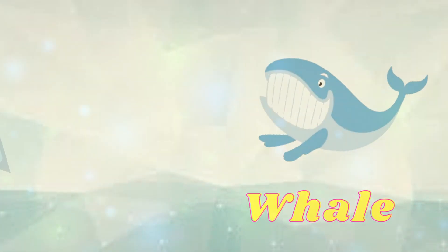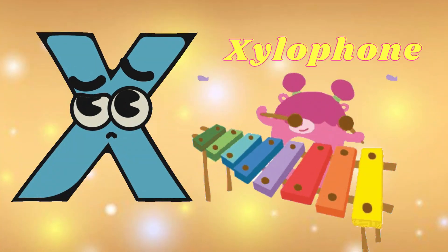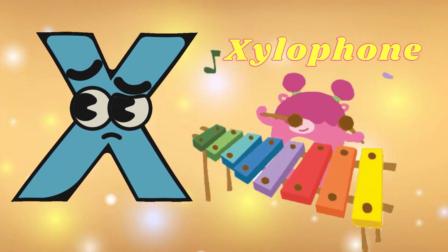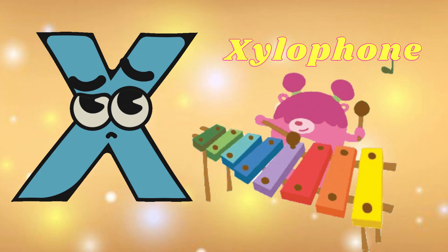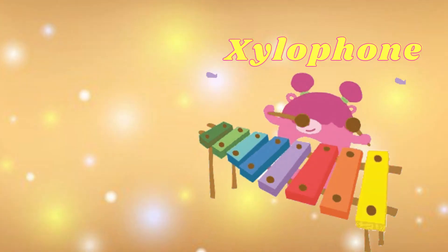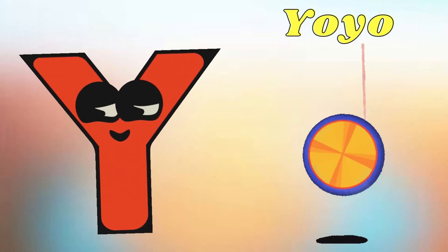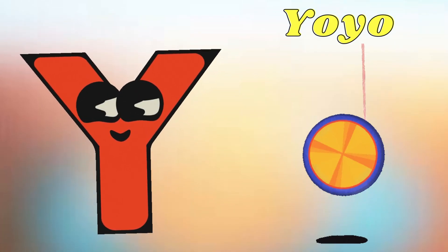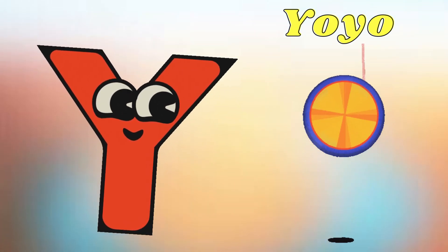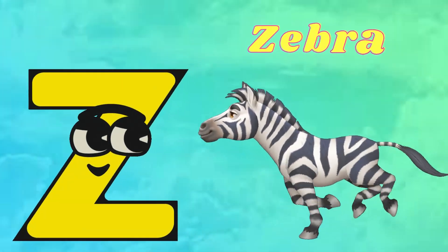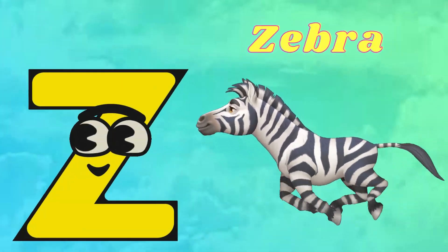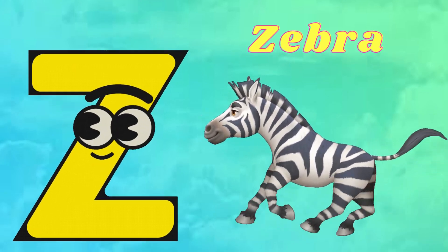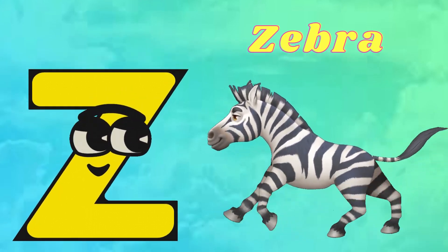X is for Xylophone. Z-z-xylophone, z-z-xylophone, X, xylophone. Y is for Yo-yo. Y-y-y-yo-yo, y-y-yo-yo, y-y-yo-yo, Y, yo-yo. Z is for Zebra. Z-z-zebra, z-z-zebra, z-z-zebra, z-zebra.